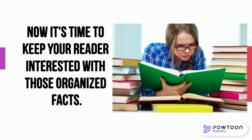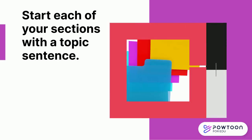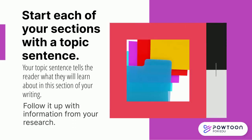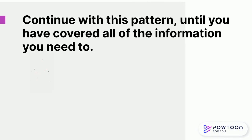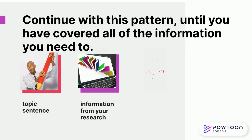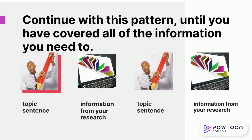Now it's time to keep your reader interested with those organized facts. Start each of your sections with a topic sentence. Your topic sentence tells the reader what they will learn about in this section of your writing. Follow it up with information from your research. Continue with this pattern — topic sentence, information from your research — until you have covered all the information you need to.